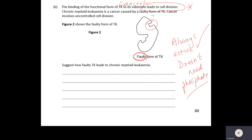The next part of the question says: binding of the functional form of tyrosine kinase to its substrate leads to cell division. So the functional enzyme, when it forms enzyme-substrate complexes and makes product, allows cells to divide — it promotes cell division. Chronic myeloid leukemia is a cancer caused by a faulty form of TK. Cancer involves uncontrolled cell division. The active site of this faulty form of TK is actually complementary to the shape of the substrate, so the faulty form is always active — the substrate binds, forms enzyme-substrate complexes, product stimulates cell division.